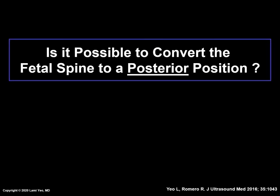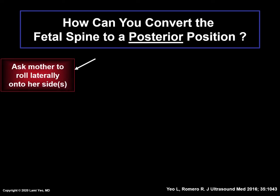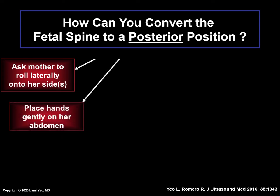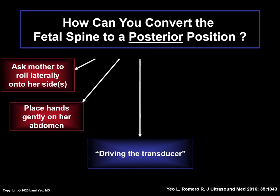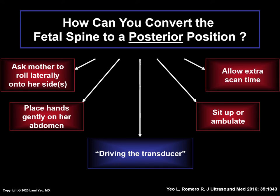Is it possible to convert the fetal spine to a posterior position? The answer is yes. There are several ways to do this: ask the mother to roll laterally onto her side in the same direction that you desire the fetal cardiac apex to turn; gently move the fetus into the desired position by placing your hands on the maternal abdomen; drive the transducer, which will be discussed shortly; have the patient sit up, ambulate, or go to the bathroom; or allow extra scan time so that the fetus changes to a more optimal position, while measuring fetal biometry and examining other anatomy in the meantime.